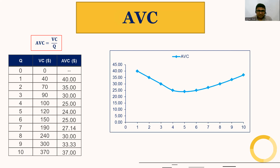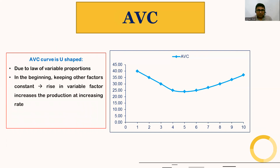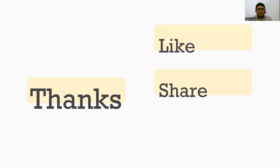Why is the average variable cost curve U-shaped? It is due to the law of variable proportions. In the beginning, keeping other factors constant, a rise in the variable factor increases production at an increasing rate because the firm is utilizing fixed factors efficiently. After some point, due to over-utilization of fixed factors, output increases at a diminishing rate, and that is why the average variable cost curve is U-shaped.